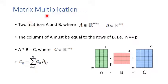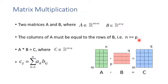Now let's see how to perform matrix multiplication. Suppose we have matrix A (m-by-n) and matrix B (p-by-q). One important constraint: the number of columns of A must equal the number of rows of B, meaning n must equal p. This is because multiplication involves multiplying rows of the first matrix by columns of the second matrix.